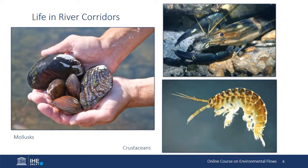Moving into the animal kingdom, mollusks and crustaceans are common and widespread in freshwater systems. Freshwater mollusks are mainly snails and clams, and at least 5,000 different species rely on freshwater ecosystems. Snails colonize plant and rock surfaces where they feed on periphyton and biofilms. Clams are generally filter feeders and filter fine organic matter from the water column. Snails and clams are consumed by larger predators, including fish and riverine mammals. Crustaceans include shrimp, crabs, crayfish, and amphipods. Crustaceans are mainly omnivorous filterers and scavengers, important in organic matter decomposition, and are also preyed upon by larger predators.